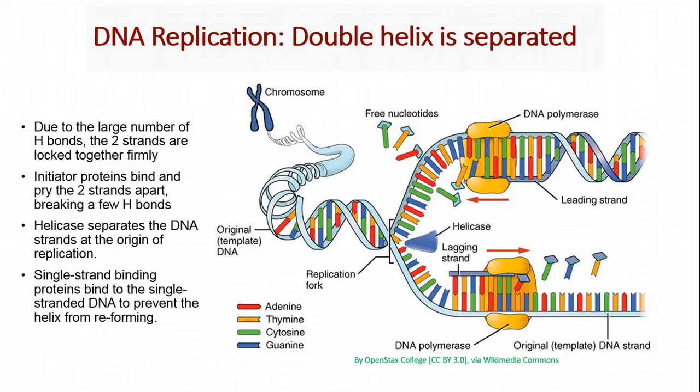So how is DNA replicated? Well, the process starts by the DNA double helix being separated. There are a large number of hydrogen bonds between the bases in DNA. These bonds need to be broken. The first thing that happens is initiator proteins bind and pry the two strands apart. So here's our double-stranded DNA. Then we have the hydrogen bonds being broken. So instead of double-stranded DNA, we have two single-stranded half DNA molecules.